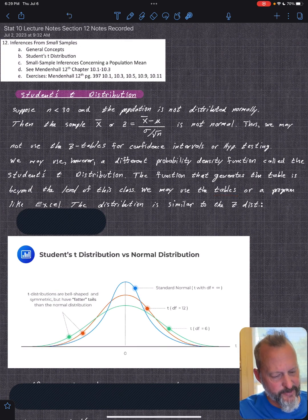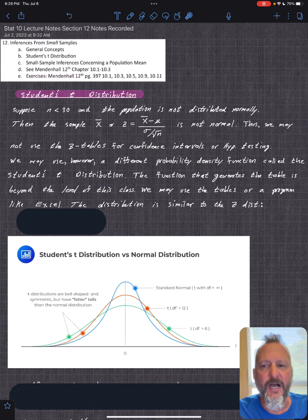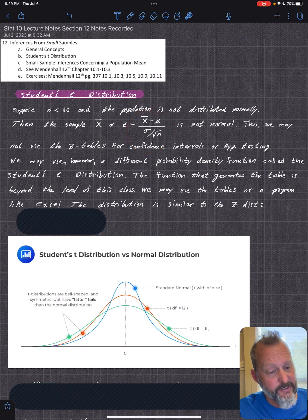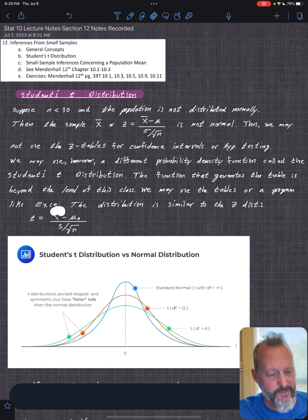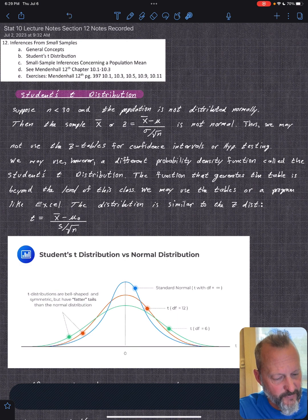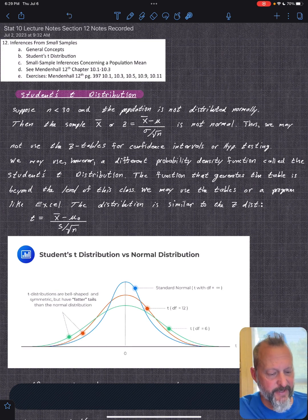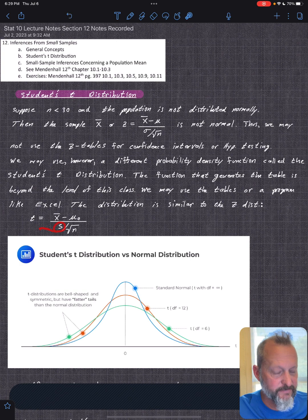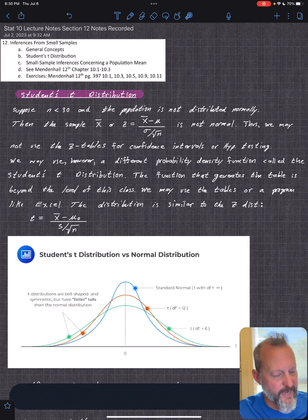So our test statistic looks like this. It's just t, you have x bar. So you calculate the mean minus your assumed mu naught, what you think it is or what you're testing against. And then you have the sample standard deviation, and then over root n. This is the same as what we've been using.